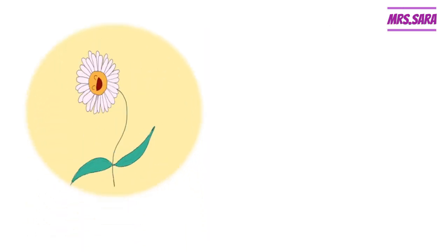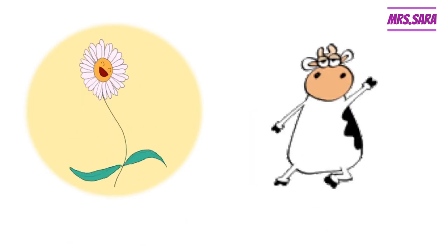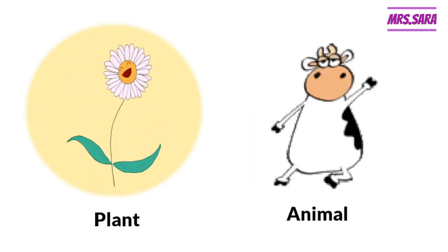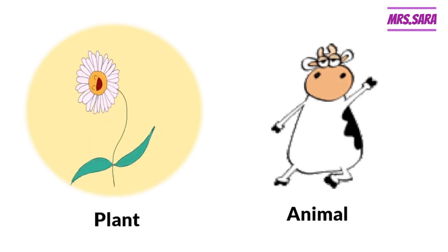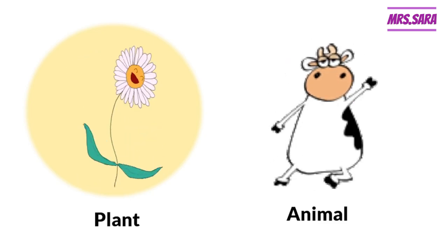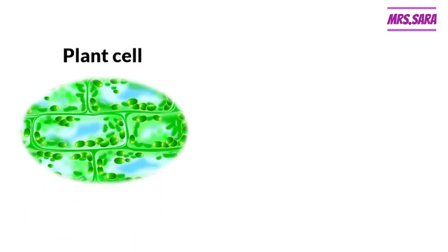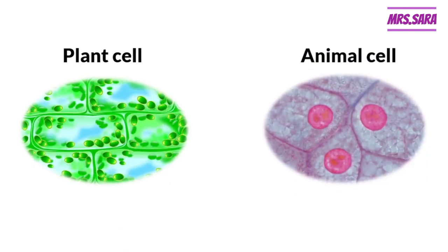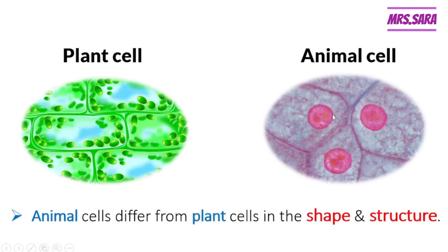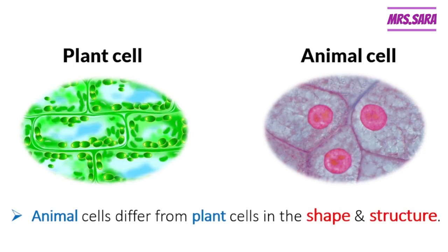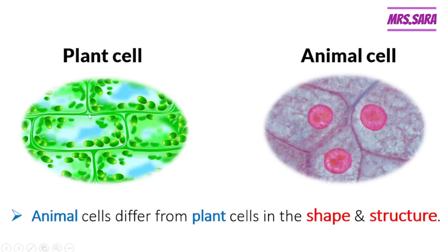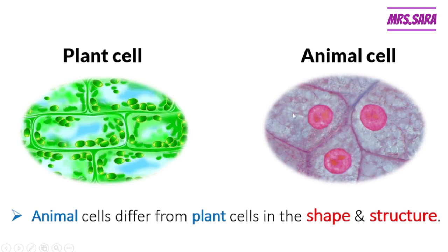What is this, Primary 6? A flower — right? And how about this? A cow. A flower is a plant, and a cow is an animal. Do they have the same cell? No. We have different cells according to the different living organism. So, we have the Plant Cell and the Animal Cell. This is the shape of the Plant Cell, and this is the shape of the Animal Cell. Animal cells differ from Plant Cells in shape and structure.